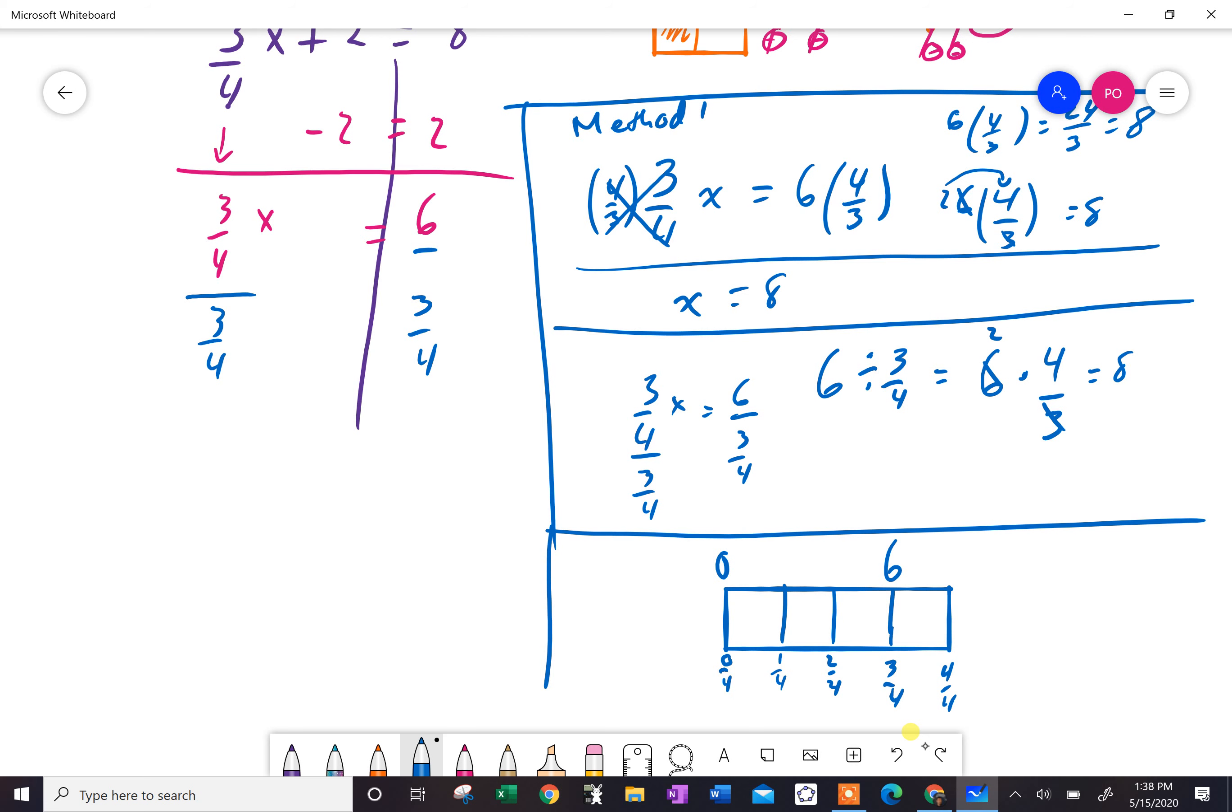How do I get from zero to six if I have to make these jumps? Well, I can't go one, one, two, six. That doesn't make sense. If I want two, two, four, six. Oh, that makes sense.